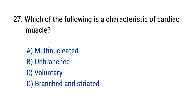Question number 27. Which of the following is a characteristic of cardiac muscle? The right answer is option D: Branched and striated.